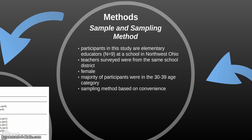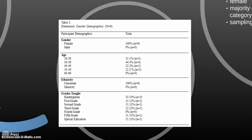The participants in this study are elementary educators at a school in Northwest Ohio. The teachers surveyed were from the same school district and school building. All participants were female and Caucasian. The majority of participants were in the 30-39 age category, which was 4 participants. Kindergarten teachers were also the majority of respondents, and 3 of those teachers responded. The study used a convenience sampling method since the teachers were easily accessible through email. A table of all demographic information of the participants is shown on the slide.